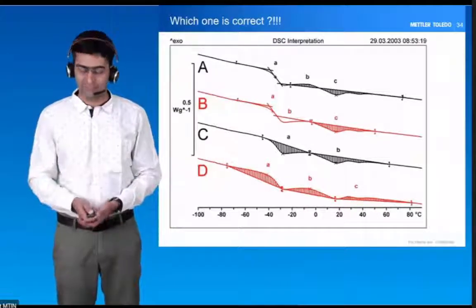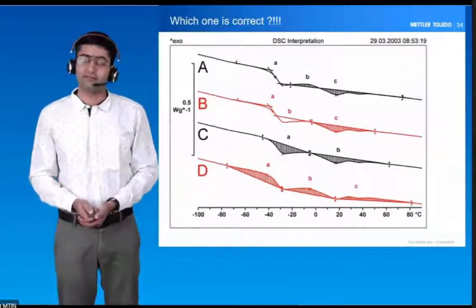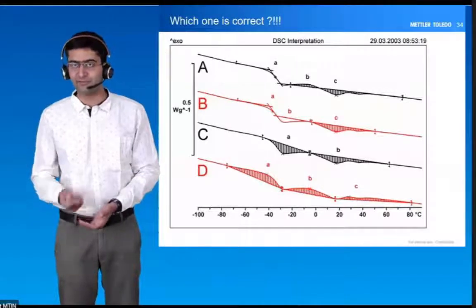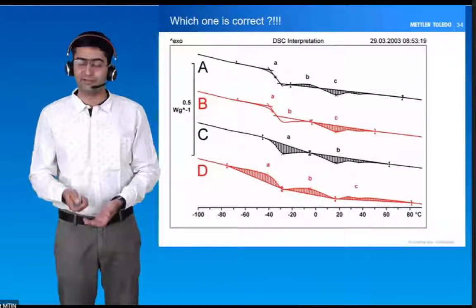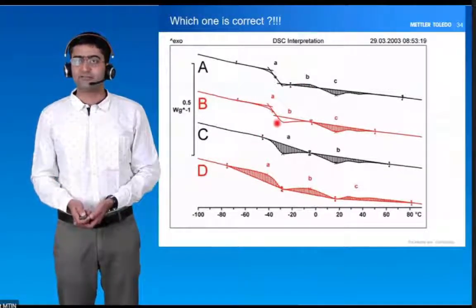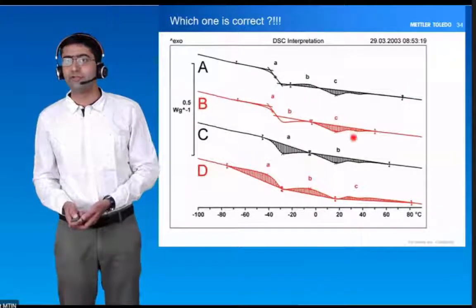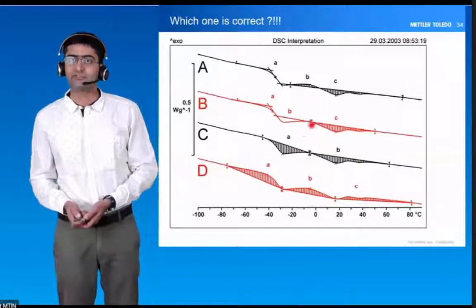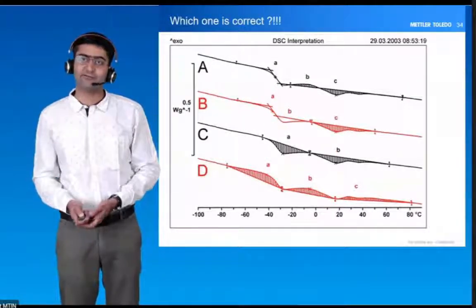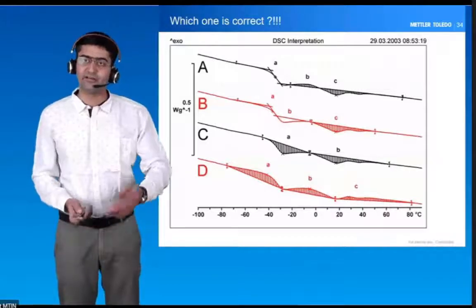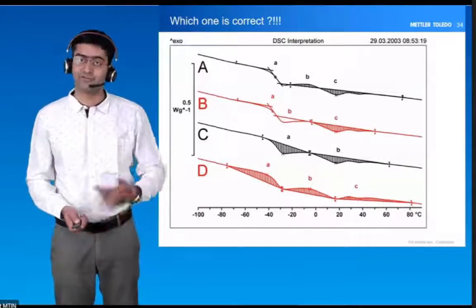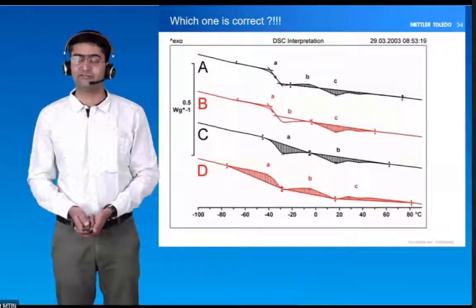This was actually a glass transition. The sample is EPDM polymer, and what you see is actually a glass transition temperature followed by the melting of some of the crystalline phase. But the same event was interpreted differently by different users because of different baseline selection.